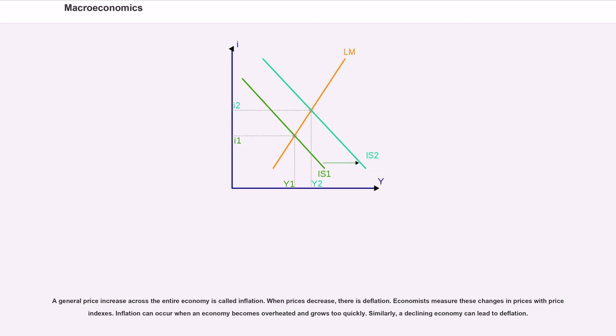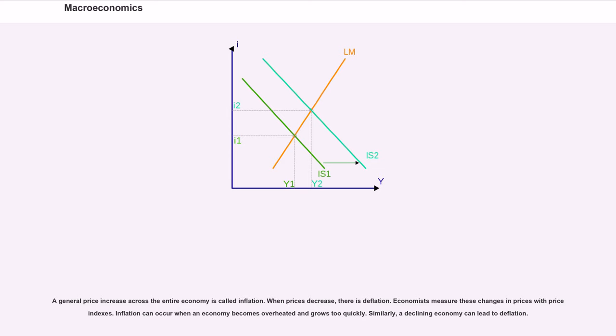Economists measure these changes in prices with price indexes. Inflation can occur when an economy becomes overheated and grows too quickly. Similarly, a declining economy can lead to deflation. Central bankers, who manage a country's money supply, try to avoid changes in price level by using monetary policy. Raising interest rates or reducing the supply of money in an economy will reduce inflation. Inflation can lead to increased uncertainty and other negative consequences. Deflation can lower economic output. Central bankers try to stabilize prices to protect economies from the negative consequences of price changes.